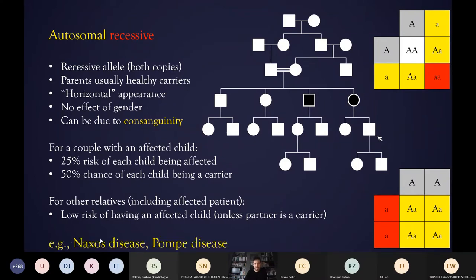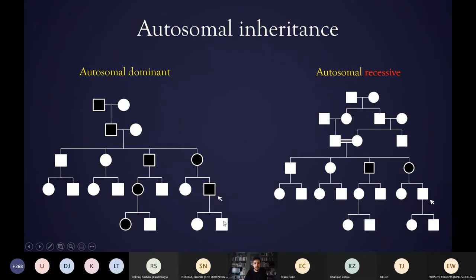Examples of genetic conditions which can cause cardiac disease and follow autosomal recessive inheritance include Danon disease — actually that's X-linked — for example Fabry disease or Pompe disease, which is a storage disorder. To recap: autosomal dominant runs vertically down through the generations; autosomal recessive runs horizontally in one generation and is often associated with parental consanguinity.